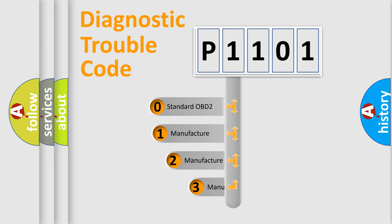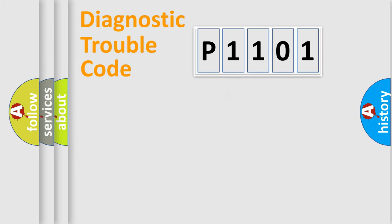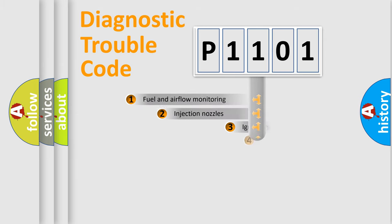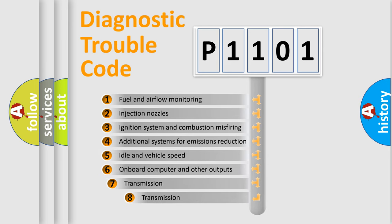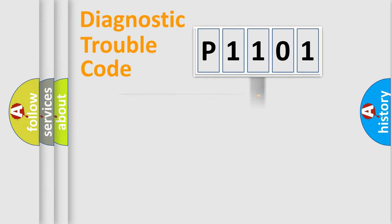If the second character is expressed as zero, it is a standardized error. In the case of numbers 1, 2, or 3, it is a more specific expression of the car-specific error. The third character specifies a subset of errors. The distribution shown is valid only for the standardized DTC code.